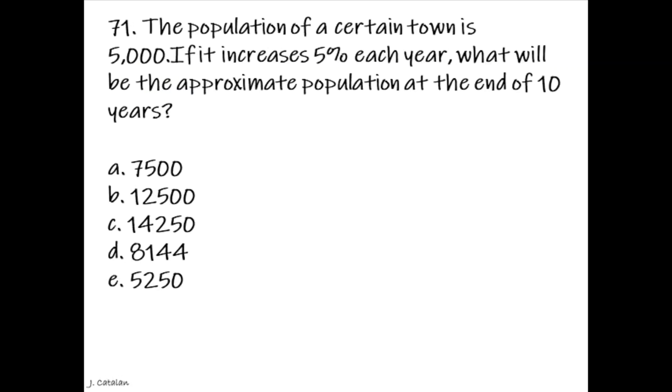Question: The population of a certain town is 5,000. If it increases 5% each year, what will be the approximate population at the end of 10 years? Answer: 8,144.